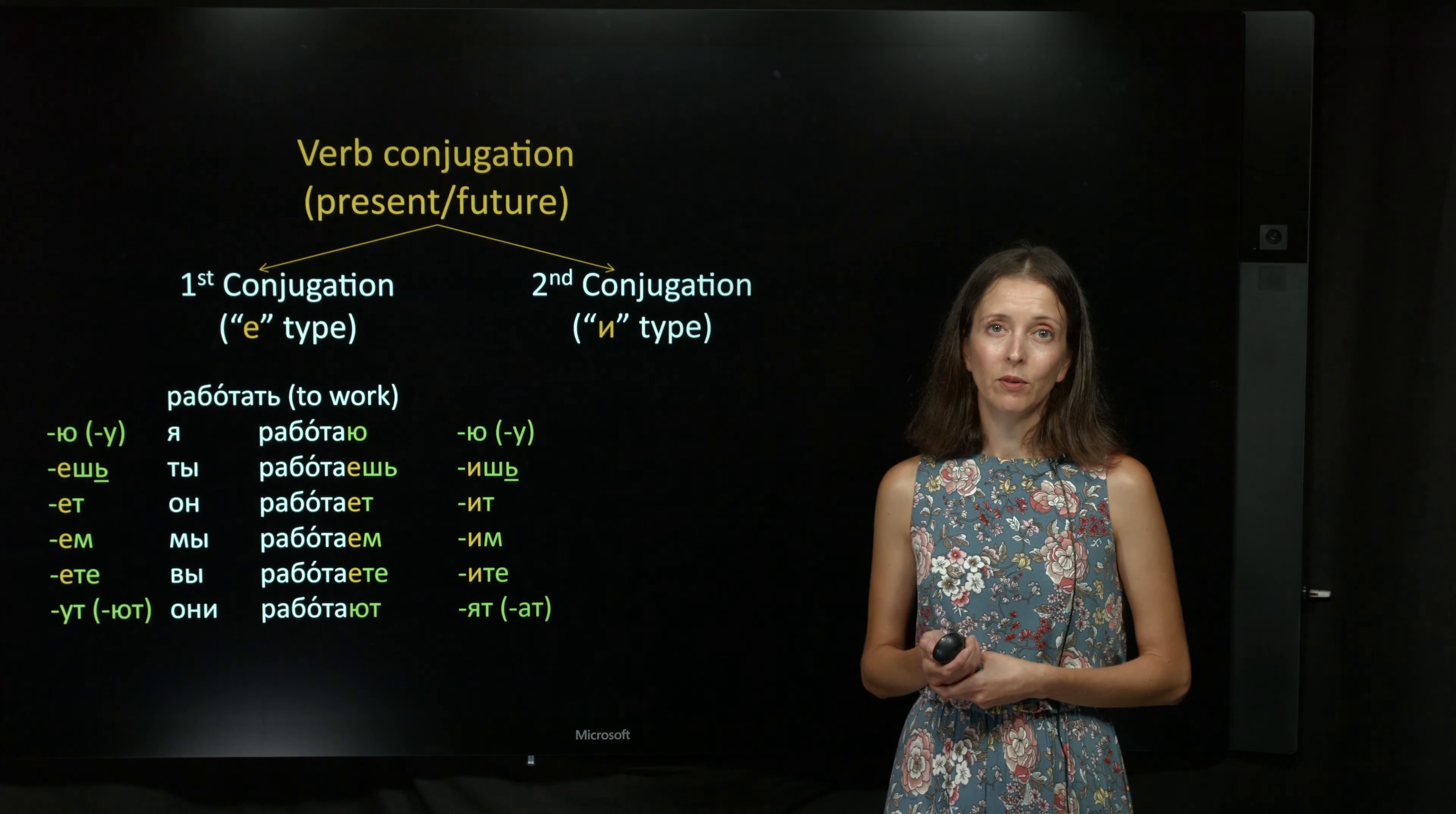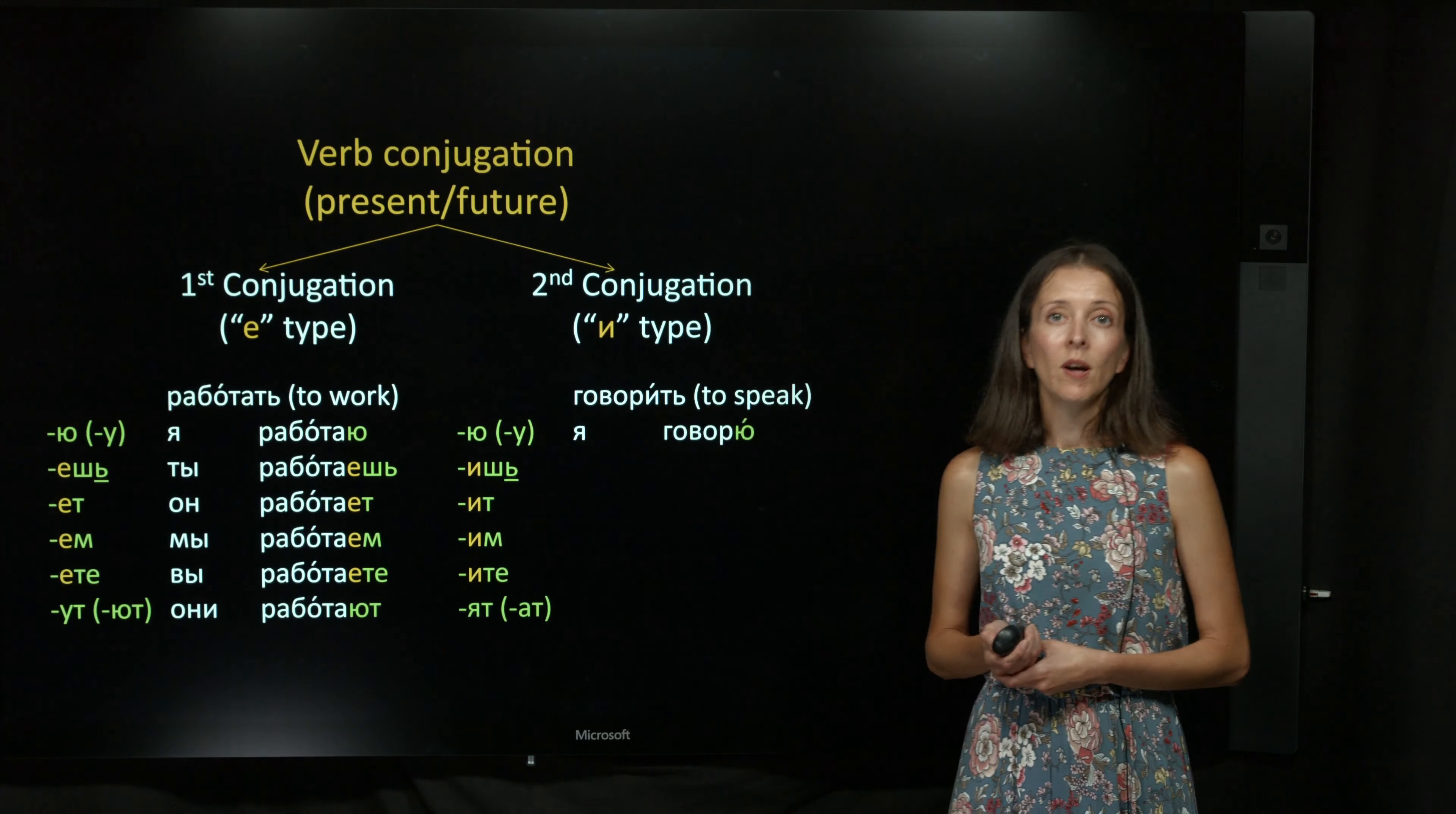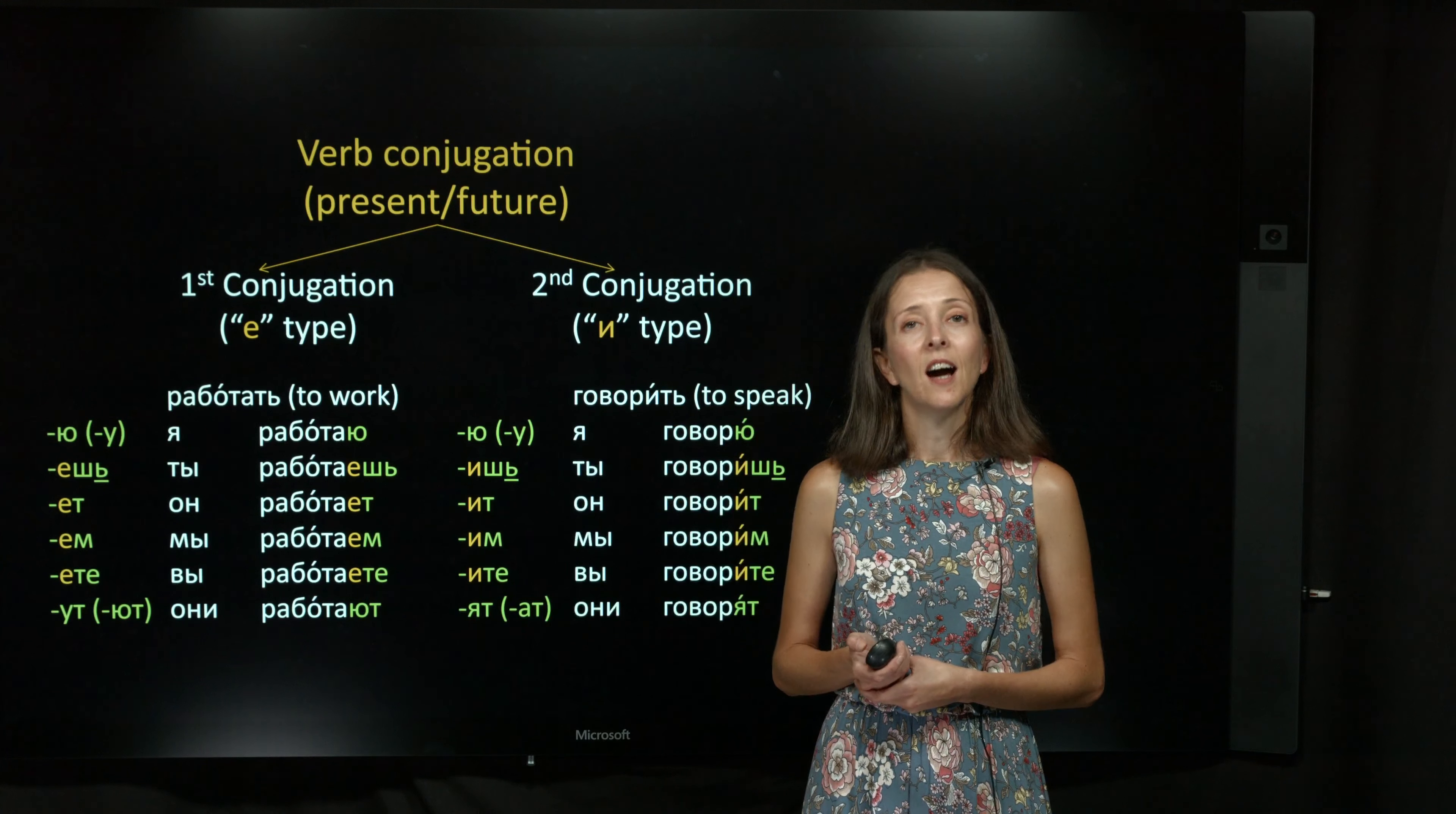они работают. The verb говорить is the second conjugation verb. Я говорю, ты говоришь, он говорит, мы говорим, вы говорите, они говорят.